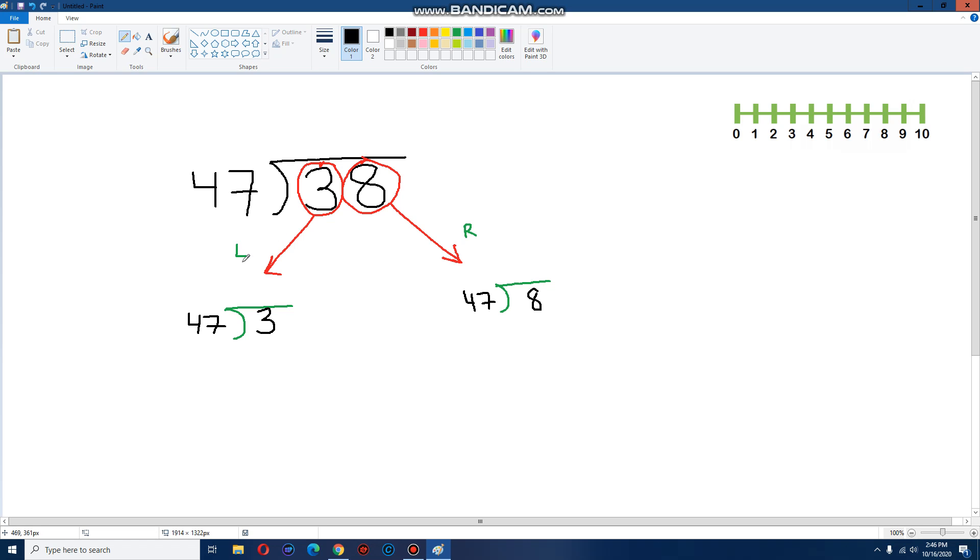We always start from the left side. So 47 multiplied by some number is close to three. And obviously, the answer is zero. 47 times zero is zero. And that's the closest number we can get to three. And three minus zero is three. Now, please don't forget, whatever number you put on the top, you've got to put it on top of the answer as well. Because that's part of the answer.